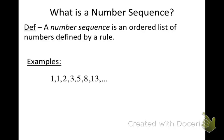If I wanted to use that rule — adding two terms to get the next term — then the next term not given would be 8 plus 13, or 21. And then 13 plus 21 is 34. That's how a sequence works.